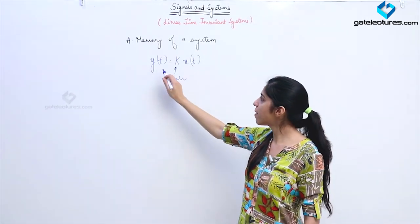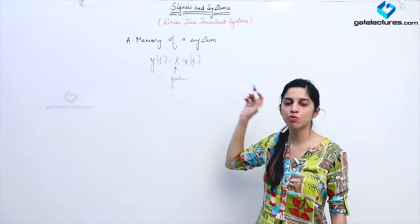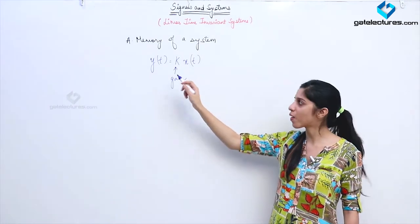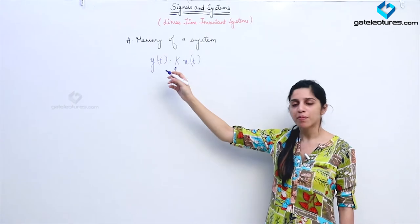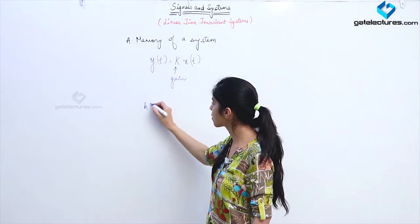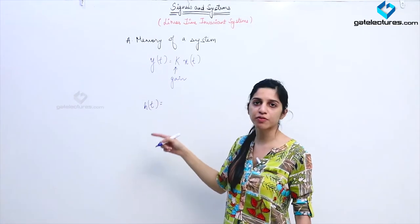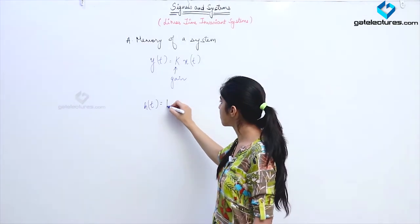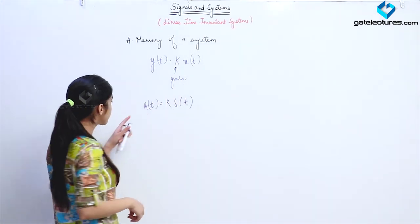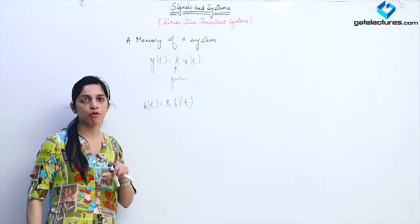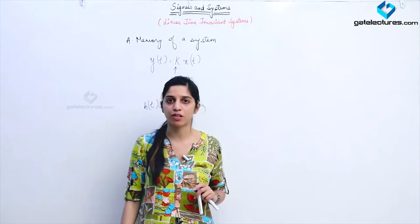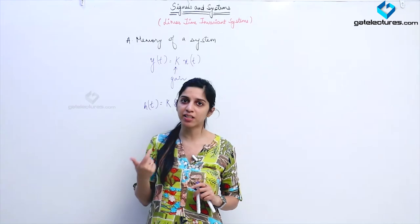Why? Because Y(T) is not depending upon any past values of the input — it depends only on the present value. The system does not have memory, and since it is linear and time invariant, the output is related by that form. Now if we talk about the impulse response, when the input is a unit impulse signal, the impulse response is going to be K·δ(T). This impulse response must exist only for T = 0 and should be zero for any T not equal to zero.